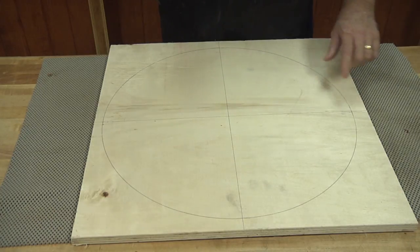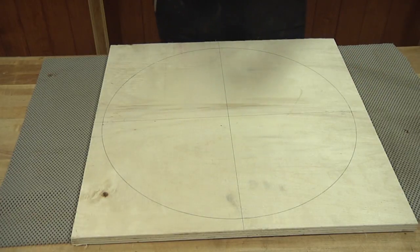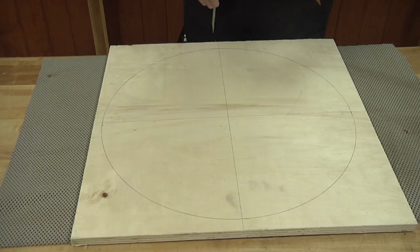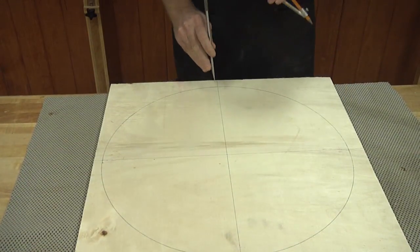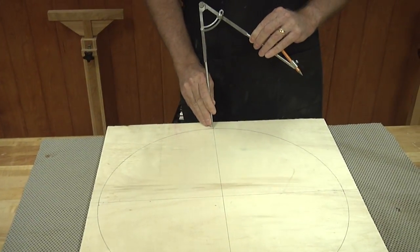But to find the others, the 1 and the 2 and the 4 and the 5, those are a little trickier. We found a little tip here to help you do that. Leave your compass set at the radius for which you drew the circle, and then start at the 12 position.